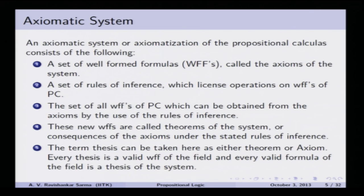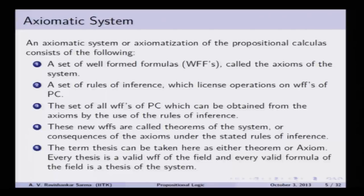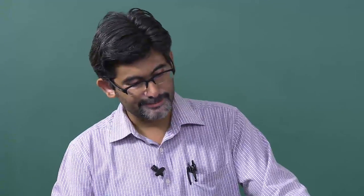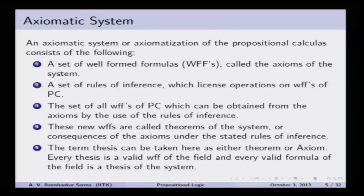What do we mean by an axiomatic system? An axiomatic system — whether Hilbert-Ackermann or the Russell-Whitehead Principia Mathematica — is defined as consisting of at least four or five essential things. First, a set of well-formed formulas called axioms. These axioms need not be proved; they are considered self-evident truths, obviously and always true. These axioms also serve as schemas — uniformly substituting anything into them generates a theorem. They do not require any proof; that is why they are self-evident truths.